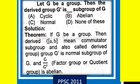And if G is divided by the derived subgroup of G, the factor group or quotient group is abelian. If you like my lecture, please subscribe, share, like, and press the bell icon for the latest updates on my YouTube channel.